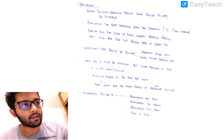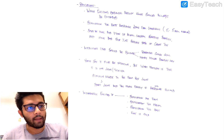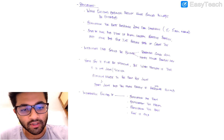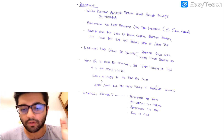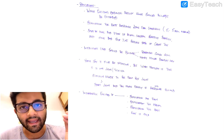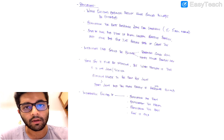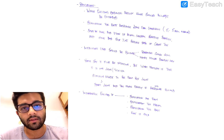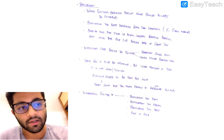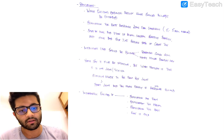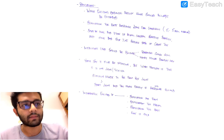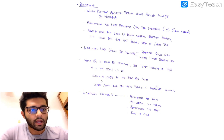A common mistake is saying 'Babinski negative.' 'Babinski positive' is accepted, but 'Babinski negative' is not. The correct terminology is to say there is a 'flexor response' or a 'normal response' when the test does not show an extensor response.